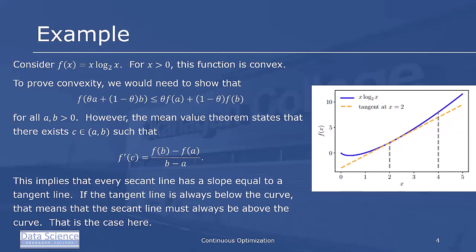However, if we recall from the mean value theorem, we know that there's always a value c between a and b, for which f'(c) equals (f(b) - f(a))/(b - a). This implies that every secant line has a slope equal to a tangent line.